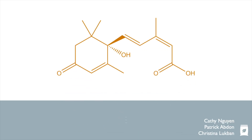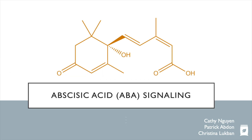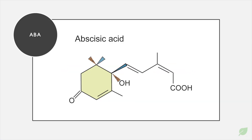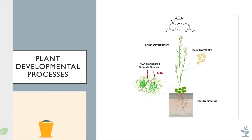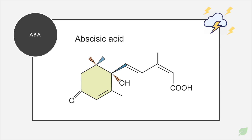Today we'll be talking about abscisic acid signaling and its role in plant development. Let's review. Abscisic acid, also known as ABA, is an important phytohormone that functions in many plant developmental processes. This includes seed development, seed dormancy, and stomatal closure. It is also commonly known as a stress hormone that responds to different environmental stresses, including temperature and water stress, to address plant growth.